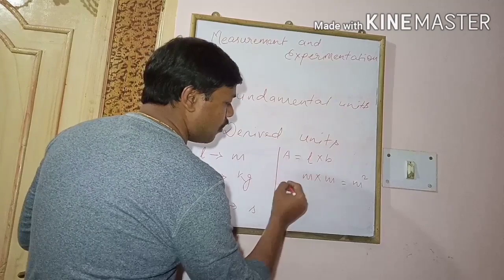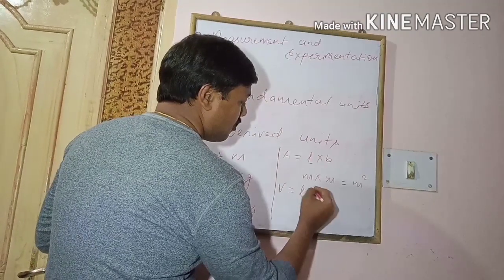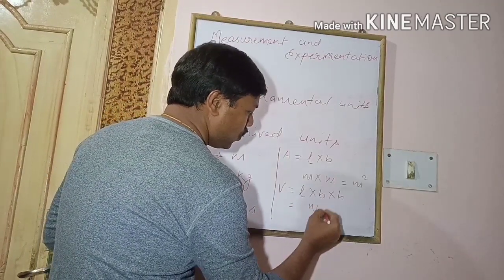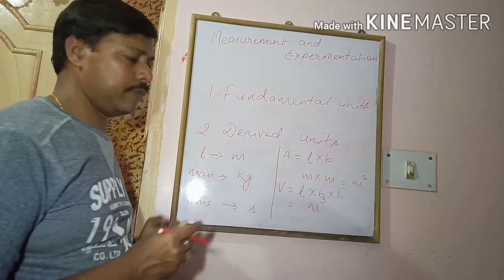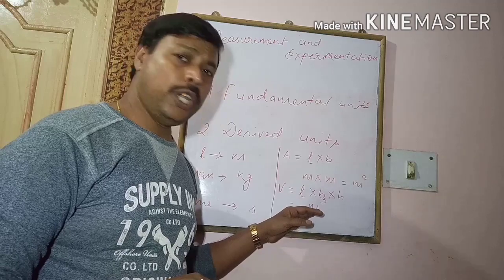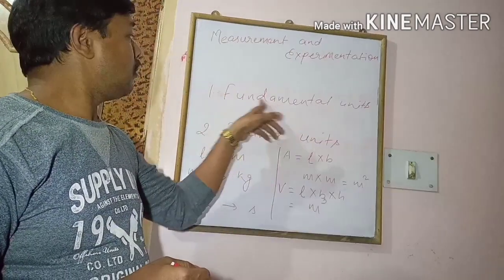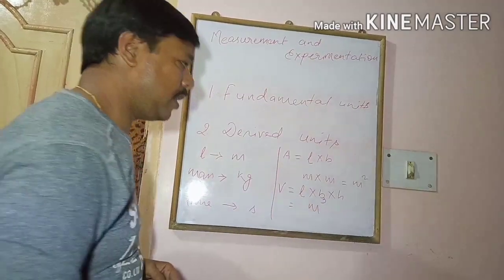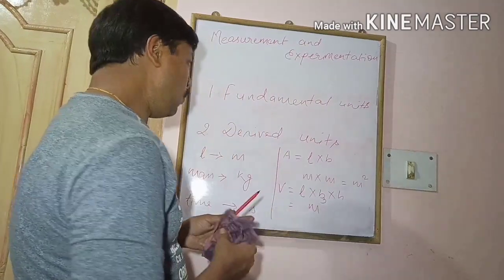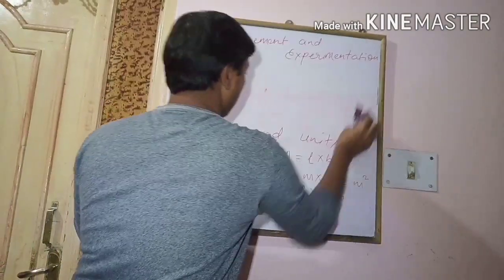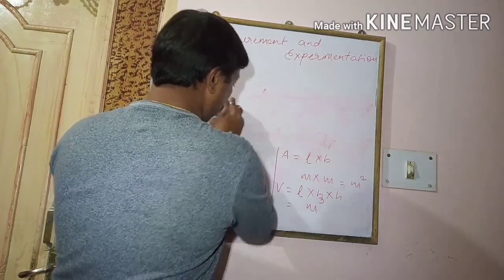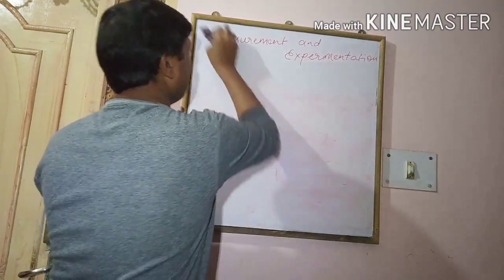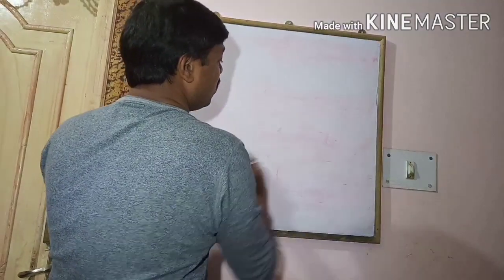Similarly, for volume: volume of a cuboid equals length into breadth into height, so the unit is meter cube or cubic meter. This also depends on fundamental units, so it is an example of a derived unit.